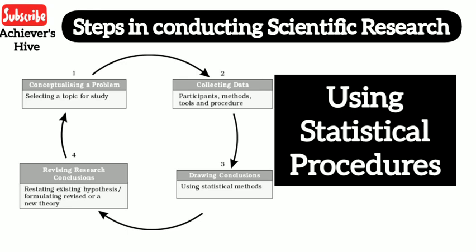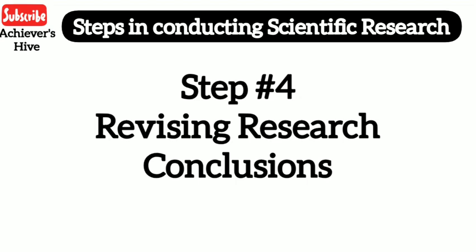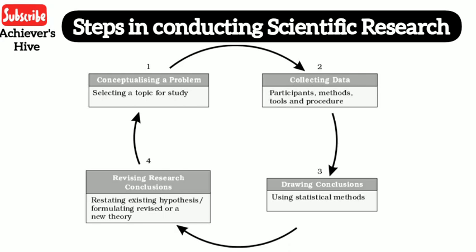The next step is revising research conclusions. The researcher can state their finding — for example, that there exists a relationship between viewing violence on television and aggression among children. We then look at what conclusion is happening and revise it. When we revise it, we know whether the theory is confirmed or not, or whether we need some alternative hypothesis. After that, our research becomes complete before the application stage.